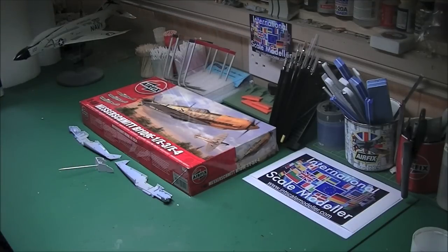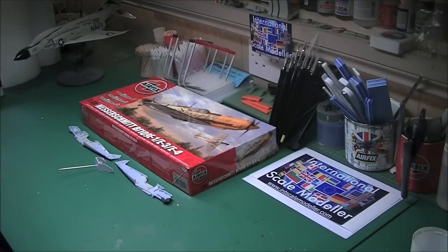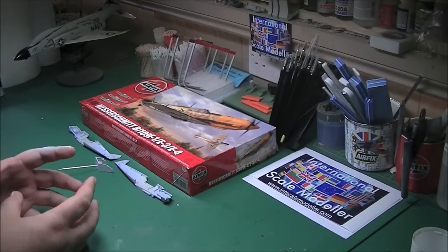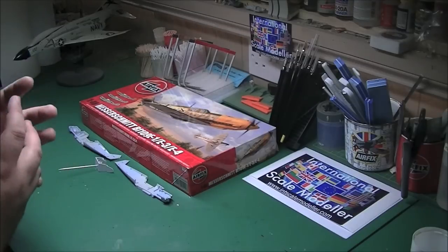We'll cover the cockpit spraying, weathering, dry brushing and what have you the way I do them. Then the fuselage halves being joined together. So that will cover gluing, filling, sanding, rescribing.